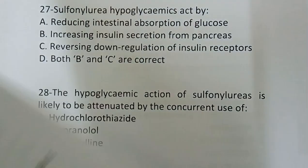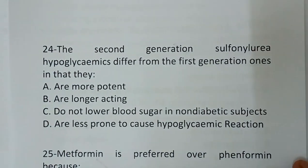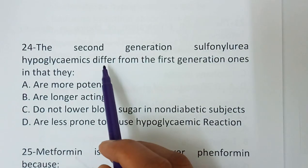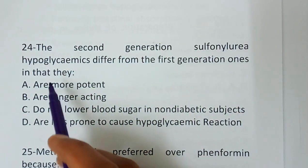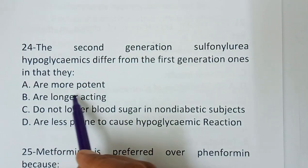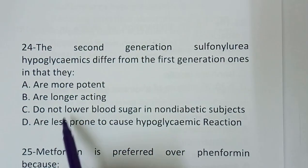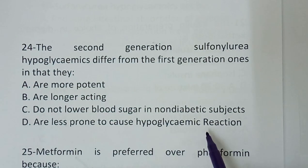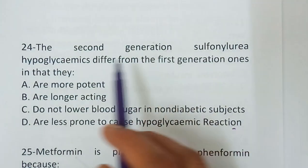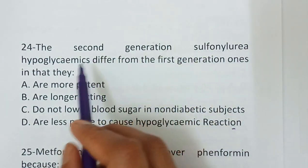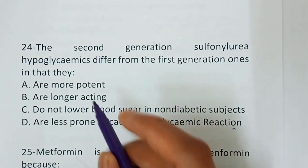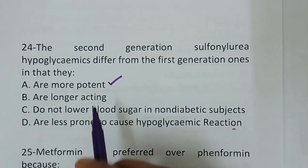Question number 24 — the second generation sulfonylurea hypoglycemics differs from the first generation ones in that: option A, they are more potent; option B, they are longer acting; option C, they do not lower blood sugar in non-diabetic subjects; option D, they are less prone to cause hypoglycemic reactions. The correct answer is option A — they are more potent. Second generation sulfonylureas are more potent than first generation ones.